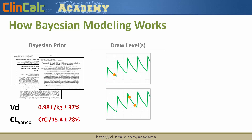The next step is that you want to draw vancomycin levels for your patient. You can either draw one level — which is one of the big advantages of Bayesian modeling, since you can potentially just get one level — or you could get multiple levels. Obviously, the more levels you get, the more accurate your estimate is going to be.